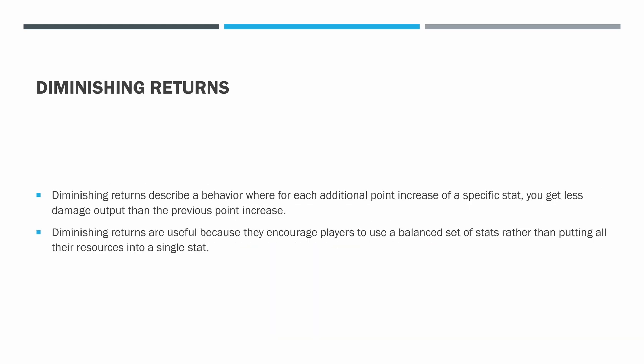If you've been playing stat-based role-playing games for a while, you're probably familiar with the concept of diminishing returns. Diminishing returns describe a behavior where for each additional point increase of a specific stat, you get less damage output than the previous point increase. This is important because it encourages players to use a balanced set of stats rather than putting all their resources into a single stat. Imagine having five or six stats to allocate points into, but your game design is such that players should just throw all of it into one — that's not fun. What's the point if one stat is just so much better than everything else? One of the ways game developers plan for this is through diminishing returns.